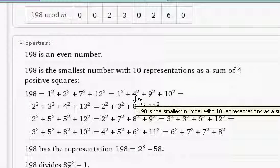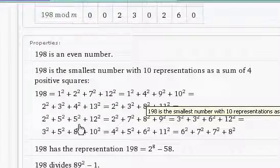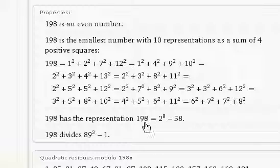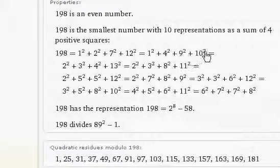And it also has the representation of 198 equals 2 to the eighth minus 58. And 198 divides as well 89 squared minus 1. Hmm. That's curious.